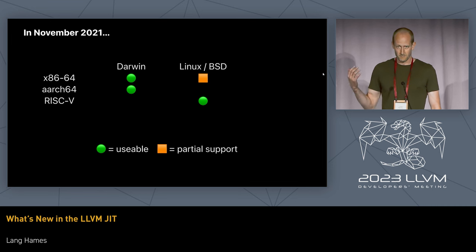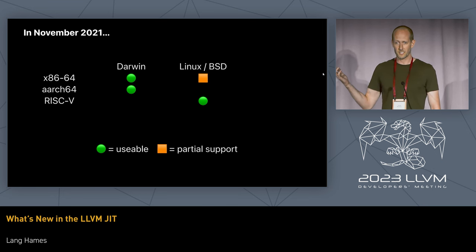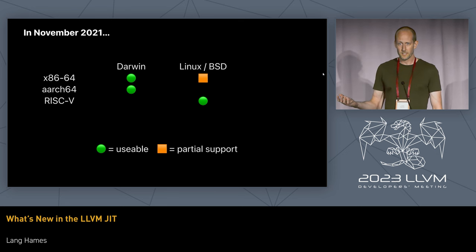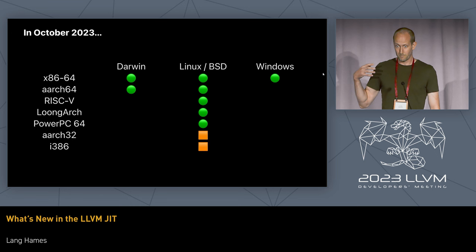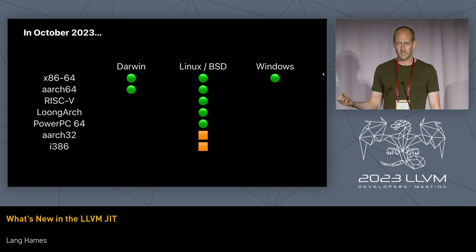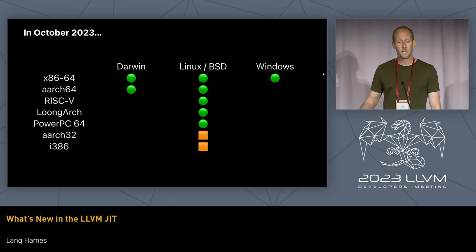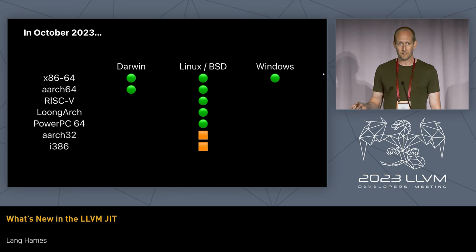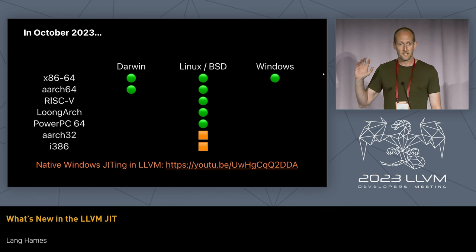Back in 2021, the situation looked like this. Green circles are usable backends, orange squares are partially supported. On Darwin, the situation was pretty good. On Linux, we had a working RISC-V backend and partial x86-64 support. Fast forward to today, a little under two years later, and thanks to community contributions, that x86-64 backend on Linux is in good shape. We've added an AArch64 backend, LoongArch, PowerPC-64 both little and big endian, and we have AArch32 and i386 Linux backends under development. We also have a native Windows backend for x86-64, courtesy of Sunho Kim, who wrote that for his Google Summer of Code project last year.